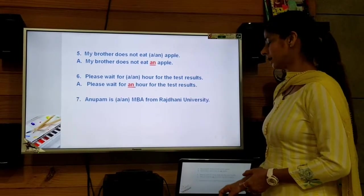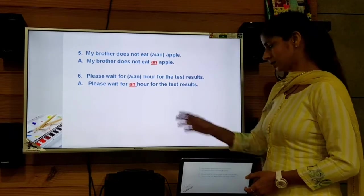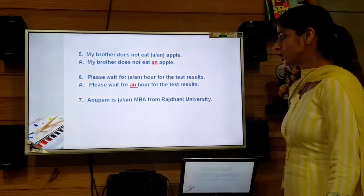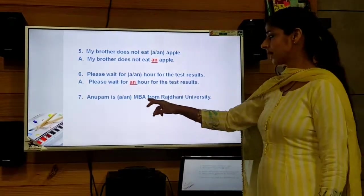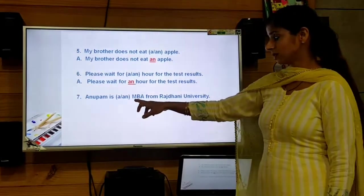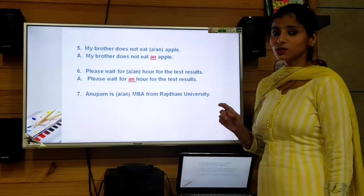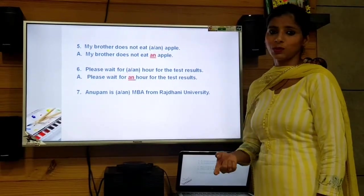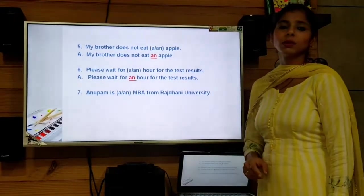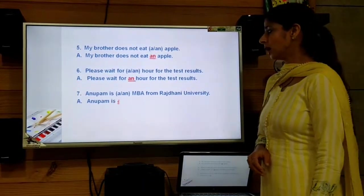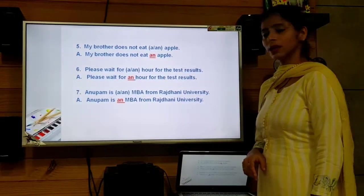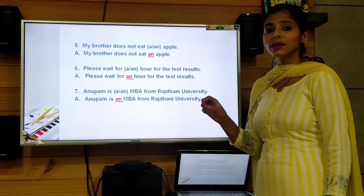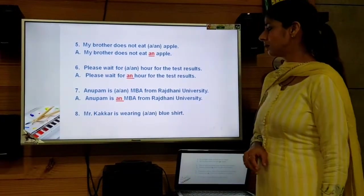Next sentence: 'Anupam is ___ MBA from Rajasthan University.' Although 'M' is a consonant, the pronunciation of 'MBA' starts with 'em', which gives a vowel sound. So we use 'an' before it. The answer is: Anupam is an MBA from Rajasthan University, because 'M' is pronounced with a vowel sound, not a consonant sound.